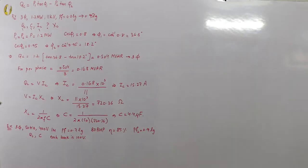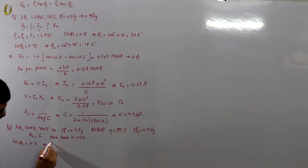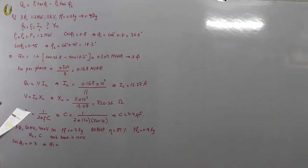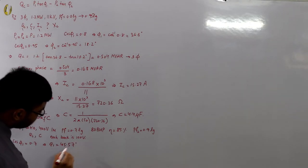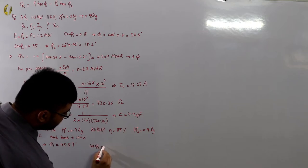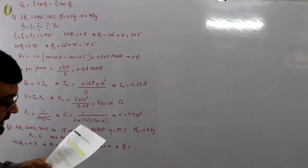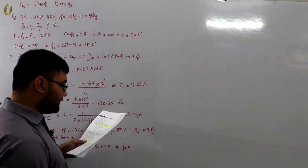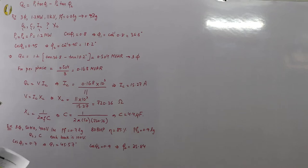From the given power factors: cos φ1 = 0.7, so φ1 = cos⁻¹(0.7) = 45.57 degrees. cos φ2 = 0.9, so φ2 = cos⁻¹(0.9) = 25.84 degrees.